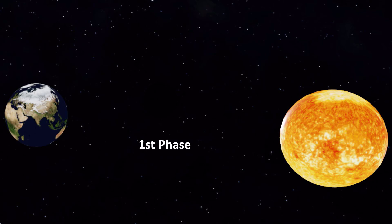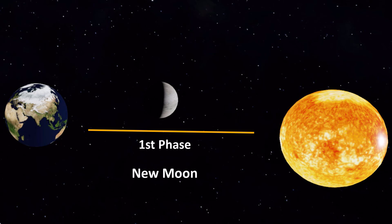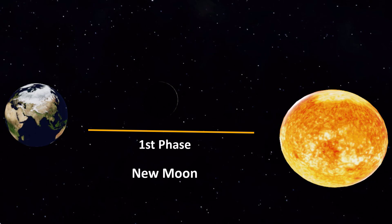The first phase of the moon is the new moon. This is when the moon is between the earth and the sun, and its illuminated side is facing away from us. This means that from our perspective, the moon appears to be completely dark and invisible.